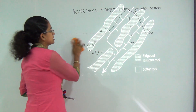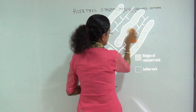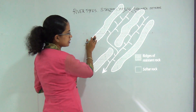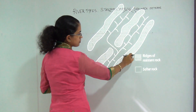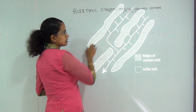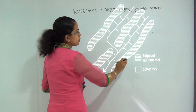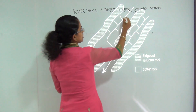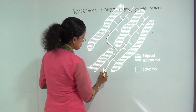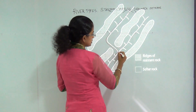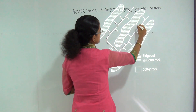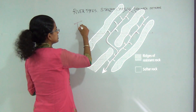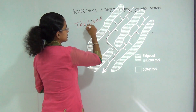The next is the trellis drainage pattern. The word 'trellis' refers to alternate ridges of hard and soft rock. The hard rocks are depicted with a distinct design, and the streams pass through the softer rock sections. You have a main consequent stream, a subsequent stream joining it, and numerous resequent streams joining the subsequent stream. This is the pattern of a trellis drainage system.